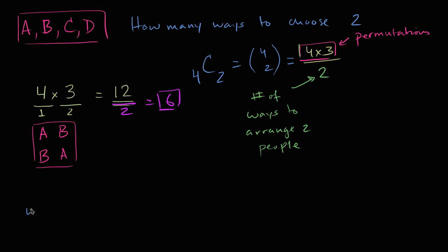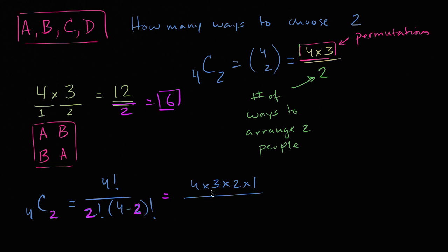Applying the formula: four times three is 12, and we're double counting because there are two ways to arrange two people, so divide by two to get six. Using the factorial form: four factorial over two factorial times two factorial gives four times three times two times one, over two times one times two times one. The two times one terms cancel, leaving four divided by two times three, which equals six.